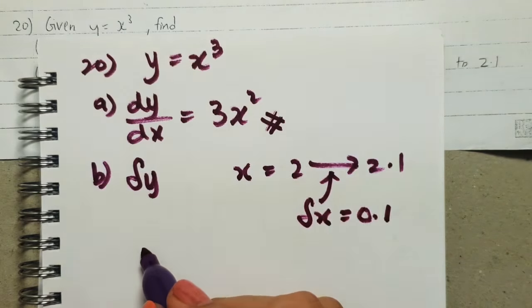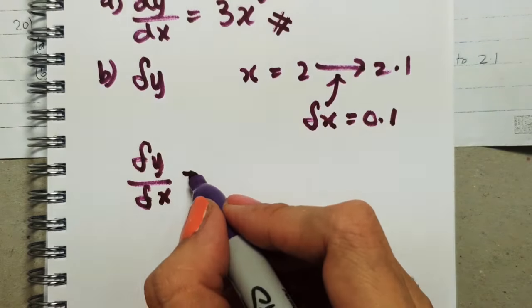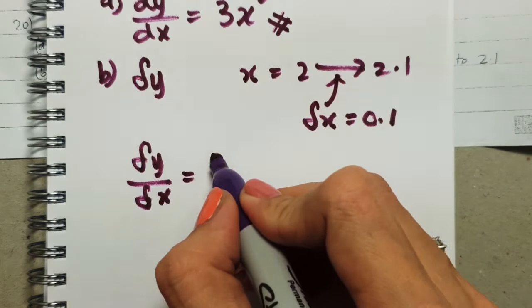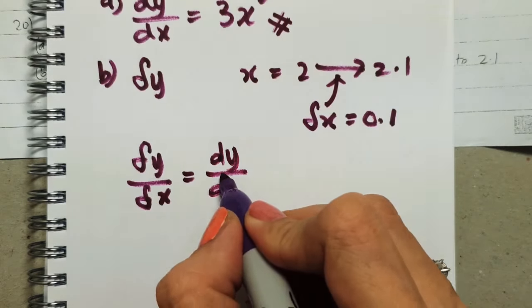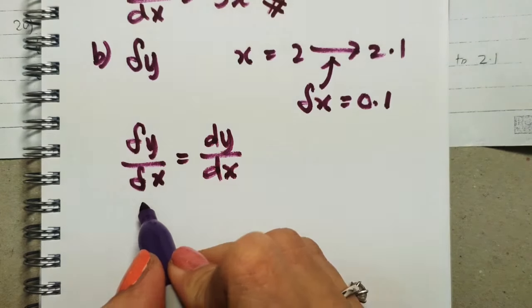So to find del y, the formula will be like this: del y by del x. I already explained this very clearly to you, the relationship between this one with the dy/dx in class.